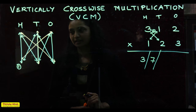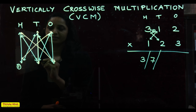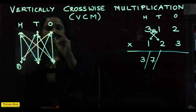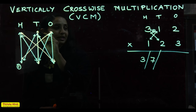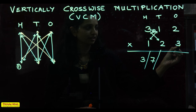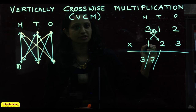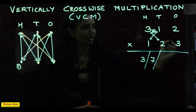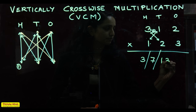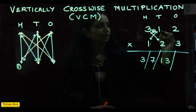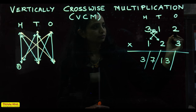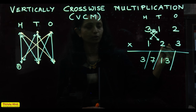The third step: cross multiply the hundreds place digit of the first number with the ones place of the second, and the ones place of the first with the hundreds place of the second, and also multiply the tens place digits. The product of 3 and 3 is 9, the product of 2 and 1 is 2, and the product of 1 and 2 is 2. So 9 plus 2 plus 2 equals 13. The fourth step is cross multiplying the tens and ones place digits: the product of 1 and 3 is 3, the product of 2 and 2 is 4, and the sum is 7.